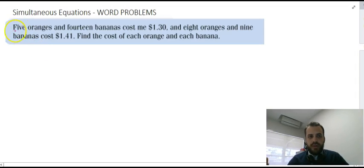So here's our word problem. Five oranges and 14 bananas cost $1.30 and eight oranges and nine bananas cost $1.41. Find the cost of each orange and each banana. So I'm going to take it through step by step. First step is identify the unknowns.